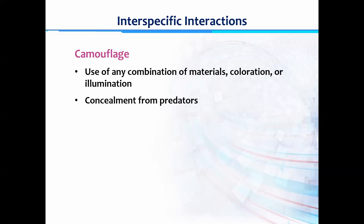Today we will study about inter-specific interactions. Inter-specific interactions are observed between different types of populations in a community. Camouflage, which is today's topic, is one type of inter-specific interaction in a community. Camouflage is a technique adopted by animals to conceal themselves from their predators.